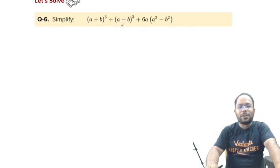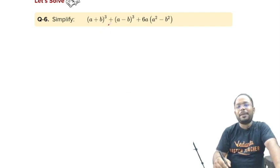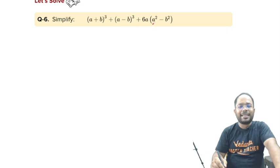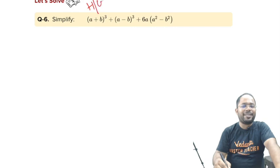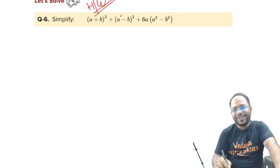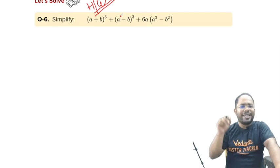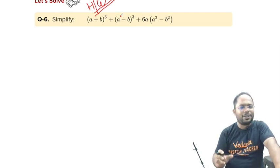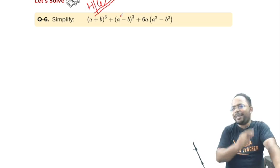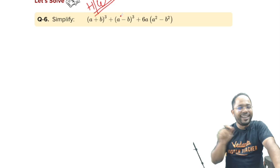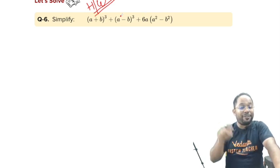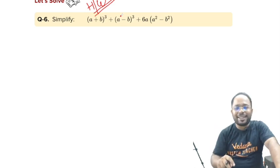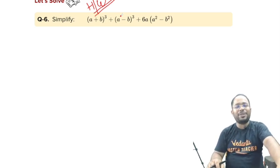Let us move on to the next question. For this question, simplify (a + b)³ + (a - b)³ + 6a(a² - b²). I am going to give you this as homework, so you will be writing the simplification, whatever you get on the comment box, and I will be waiting for your reply on the comment box. Again, I am reiterating, if you have not subscribed the channel, please do subscribe this channel and also share with your friends. See you in the next video. Thank you, students. Bye-bye.